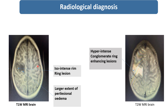This is the MRI brain T1 image in which you can see a ring-like lesion. It contains an iso-intense rim and surrounding this lesion there is perilesional edema — very large edema surrounding this ring-like lesion. And this is the T2 image of the MRI brain, in which you can see conglomerated ring-enhancing lesions are present.